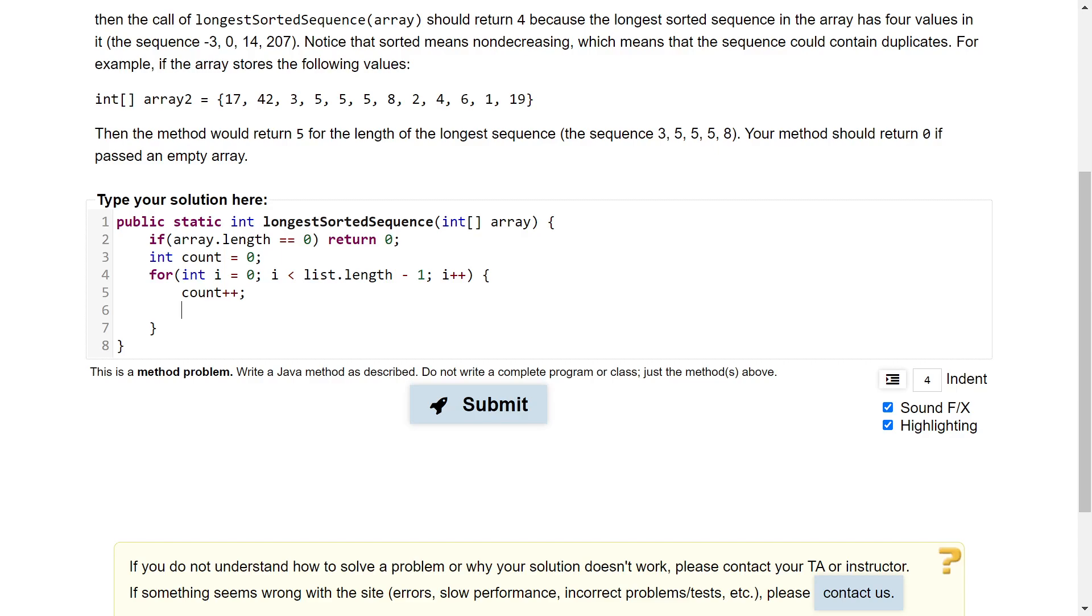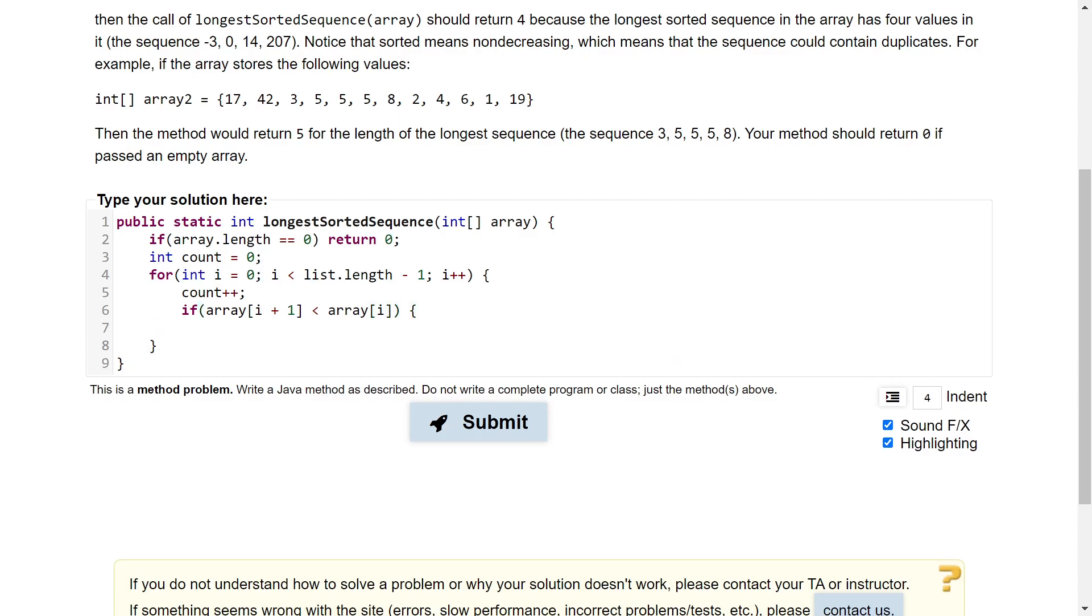Next, we want to check to see if the number following it is greater than, equal to, or less than. And that's because if it's less than, then the sequence of numbers that we've looked at so far has to essentially be cut off because sorted means non-decreasing. So any number following whatever we were looking at shouldn't be decreasing. So let's go ahead and check that. If the number following the number we just looked at, the element following the element we just looked at, is less than the element we are currently looking at.